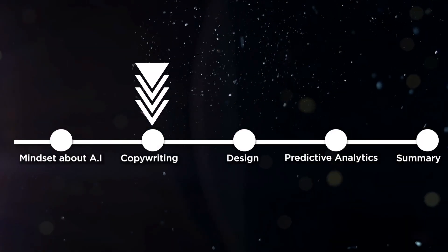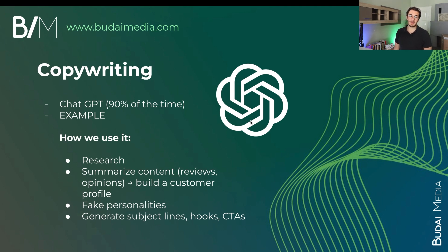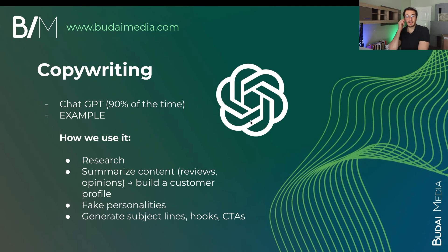The first field where we use AI is copywriting. There are many tools out there, like vsl.ai, which is a good one, but we still use ChatGPT 90% of the time, and it really does the job. In my experience, the first use of AI copywriting with ChatGPT is research. If you've ever done a piece of marketing copy, you know that the research takes as much time as writing — in many cases even more. Once you have your ideas and the research is done properly, it actually takes less time to write the actual copy.